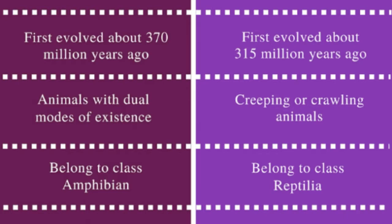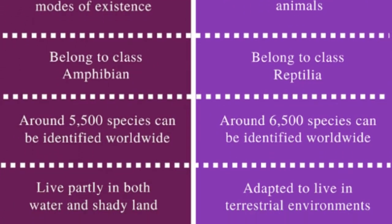Amphibians belong to class Amphibia and reptiles belong to class Reptilia. Around 5,500 species of amphibians can be identified worldwide, while around 6,500 species of reptiles can be identified worldwide.